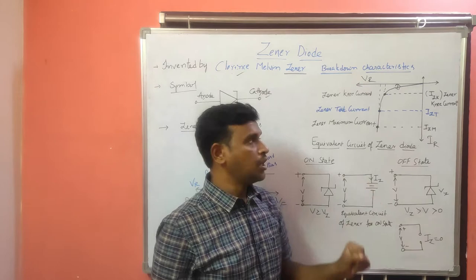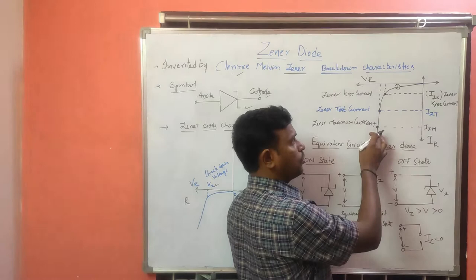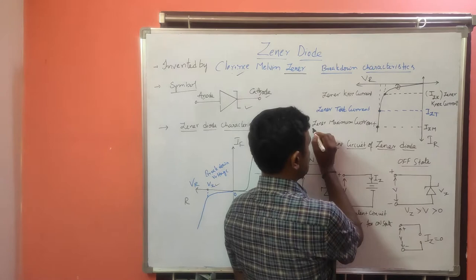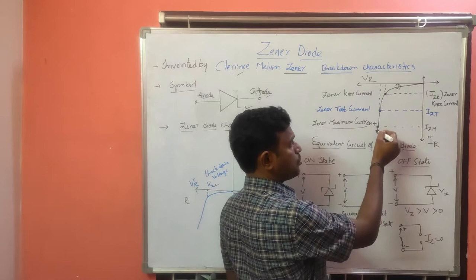After the knee point, the junction breakdown is obtained, the current will rise shortly, more current flows, and the final current it reaches is called the GINA maximum current. As we increase the voltage further, the breakdown appears and suddenly the current will sharply rise and go to the maximum current, which is called the GINA maximum current.